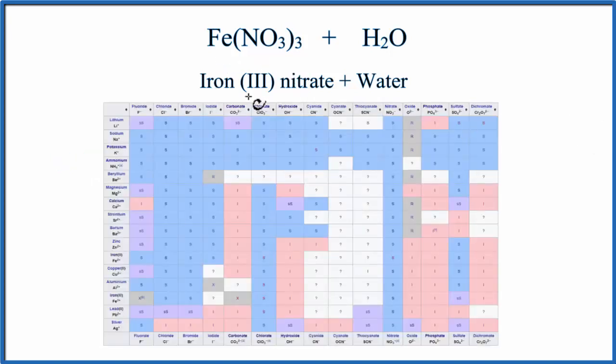So we're going to find iron 3 on this side. These are the positive ions. So we come down, and there's iron 2. We want iron 3. And then across the top, these are the anions, the negative ones. Here is the nitrate. So we go across here till we meet the nitrate column, and we see an S. That means that iron 3 nitrate is soluble in water.